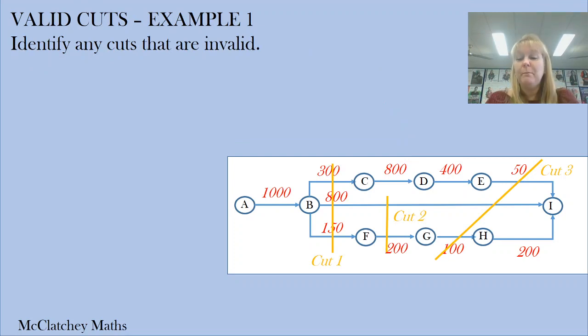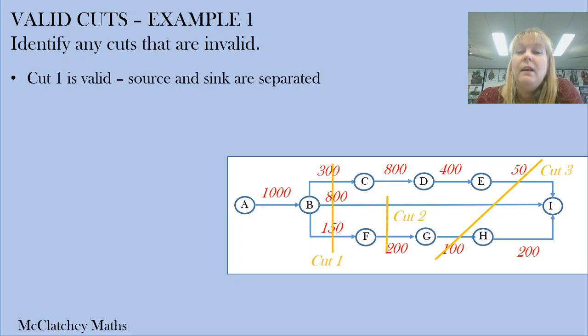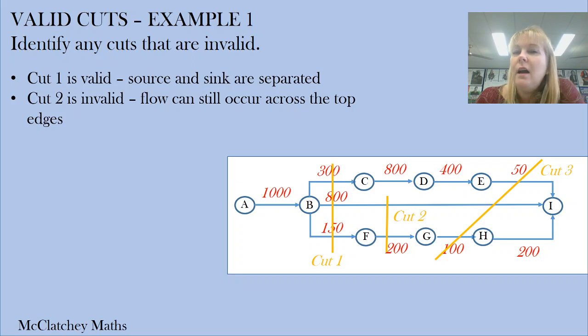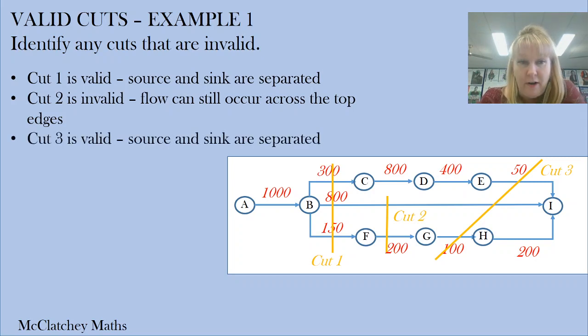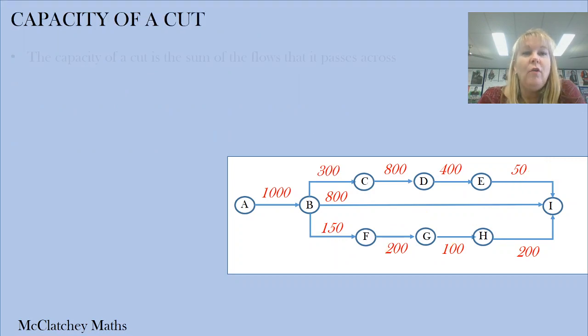One of the simple questions you might get asked is to identify which cuts are valid and which are not. We've got three cuts on this diagram. Cut one is valid because we've completely cut our source and sink off from one another. Cut two is not - it doesn't cut right through the network and we can still have some flow along our top edges. Cut three is also valid. You'll notice we've got a diagonal cut - diagonal is fine.